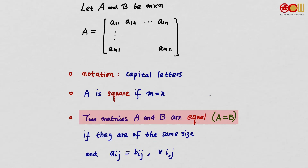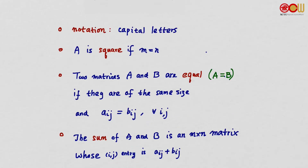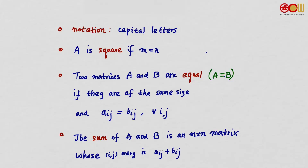We say two matrices A and B are equal — we use the notation A = B — if they are of the same size and a_ij is the same as b_ij for all i, j. When A and B are of the same size, we can sum them up. The sum A + B is an m by n matrix whose (i,j) entry is a_ij plus b_ij.